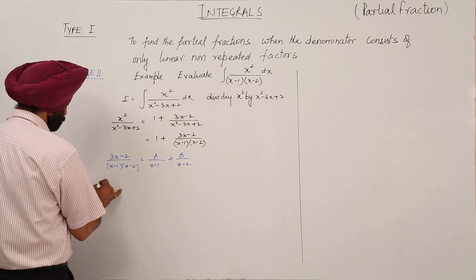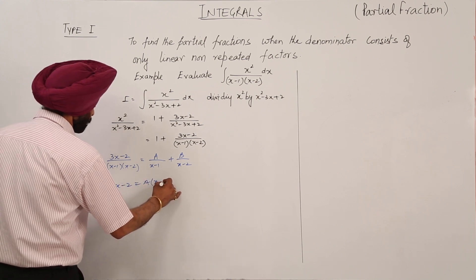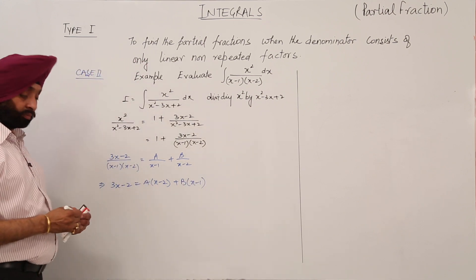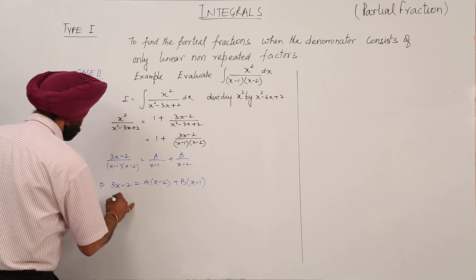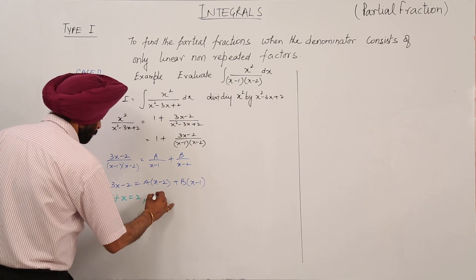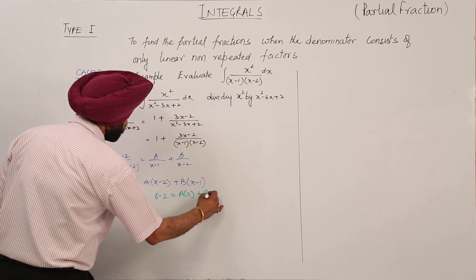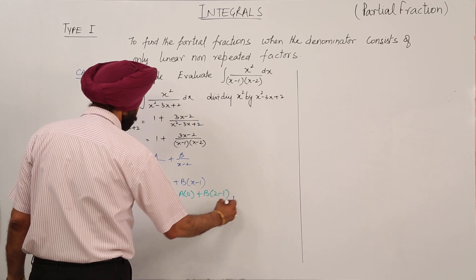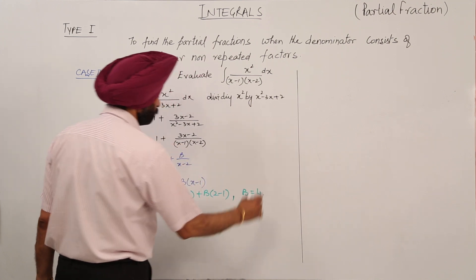Then 3x - 2 = A(x - 2) + B(x - 1). Let x = 2: 6 - 2 = A(0) + B(2 - 1), so 4 = B. Therefore B = 4.